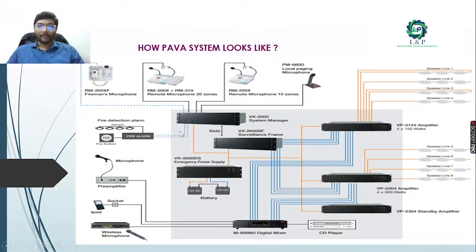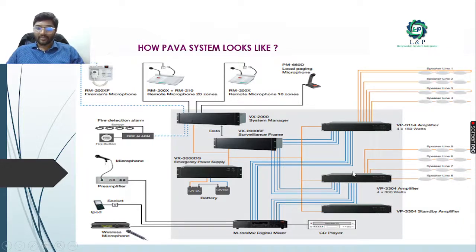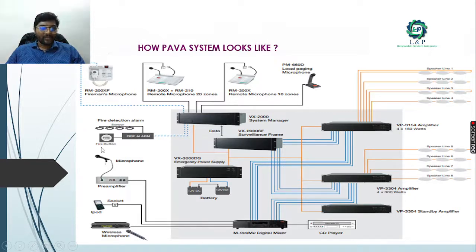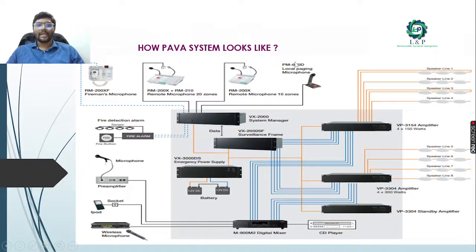To connect the speakers, amplifiers are used with different wattage ratings - for example, a 4 x 150 watts amplifier and a 4 x 300 watts amplifier. All speakers are connected to it, then to a digital mixer, which connects to all the amplifiers and directs to the surveillance frame. Input signals include wired microphones, wireless microphones, and pre-amplifier microphones. Remote microphones are also used for local paging purposes.